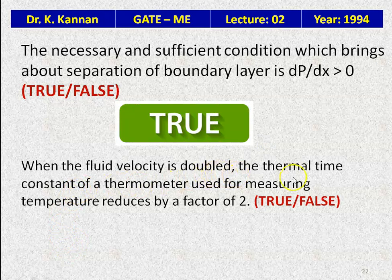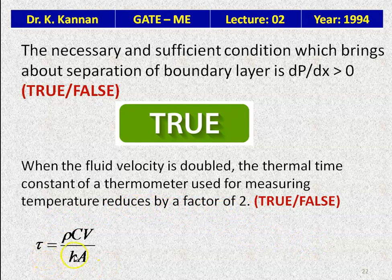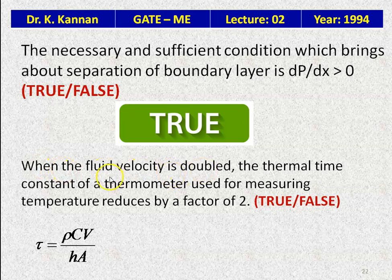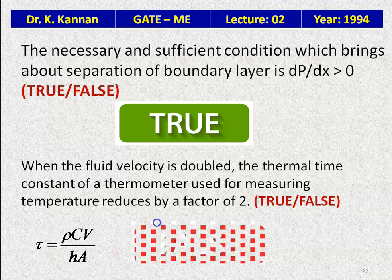When the fluid velocity is doubled, the thermal time constant of a thermometer reduces by a factor of 2 — this is false. The time constant τ = ρcV/(h·A), where h is the heat transfer coefficient which depends on velocity. However, doubling the velocity does not necessarily halve h, so the time constant does not reduce by exactly a factor of 2.